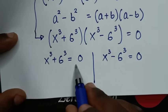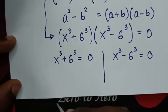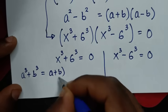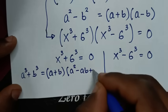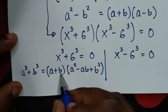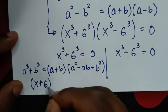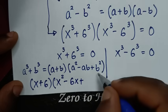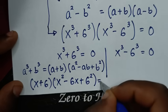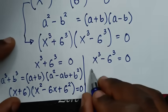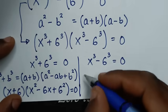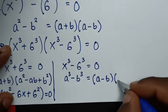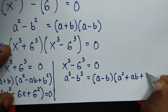Now from the first solution, x to the power of 3 plus 6 to the power of 3, this part is in the form of a cubed plus b cubed, which is equal to (a plus b)(a squared minus ab plus b squared). So here it will be (x plus 6)(x squared minus 6x plus 6 squared). Also from the second equation, x cubed minus 6 cubed is in the form of a cubed minus b cubed, which is equal to (a minus b)(a squared plus ab plus b squared).